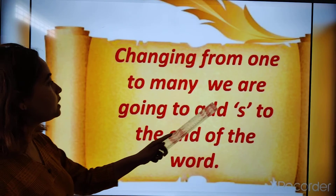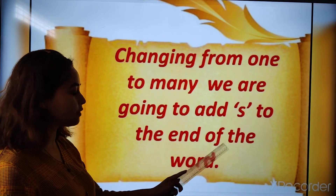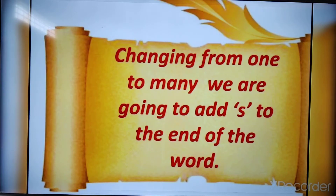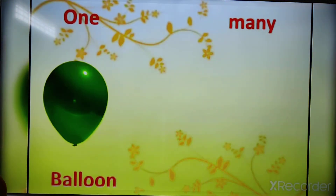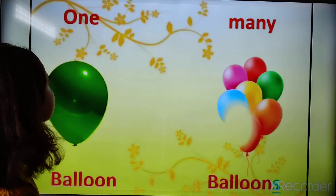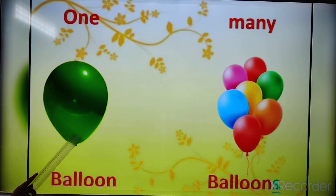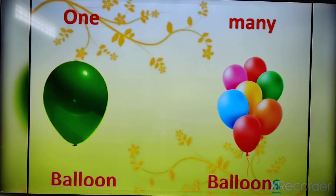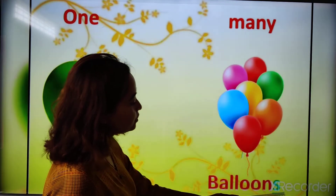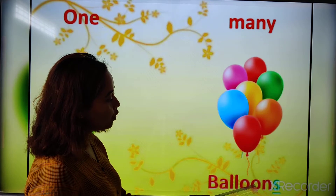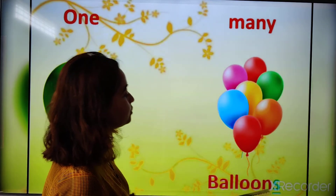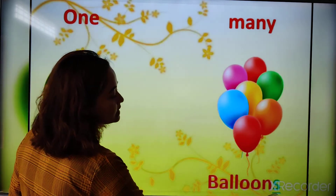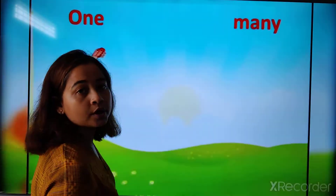Changing from one to many, we are going to add S to the end of the word. Just see here — one balloon and many balloons. See the spelling of balloon in one: B-A-L-L-O-O-N. Balloon. And next to that, balloons: B-A-L-L-O-O-N-S. Here we have added S to the end of the word in many.